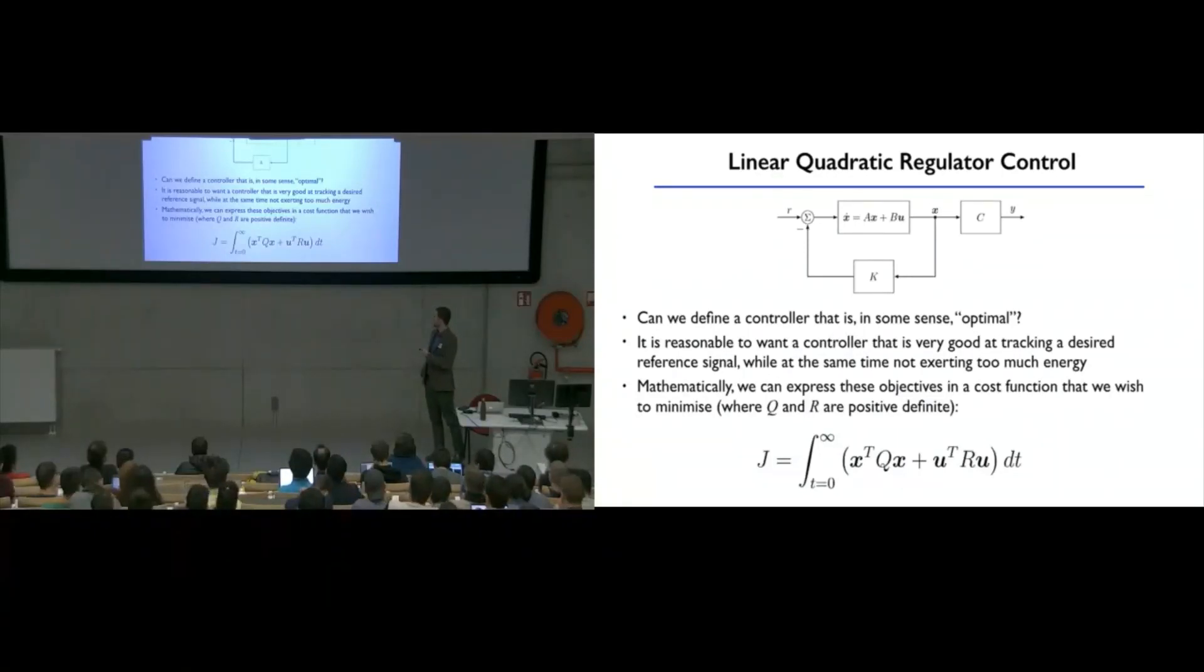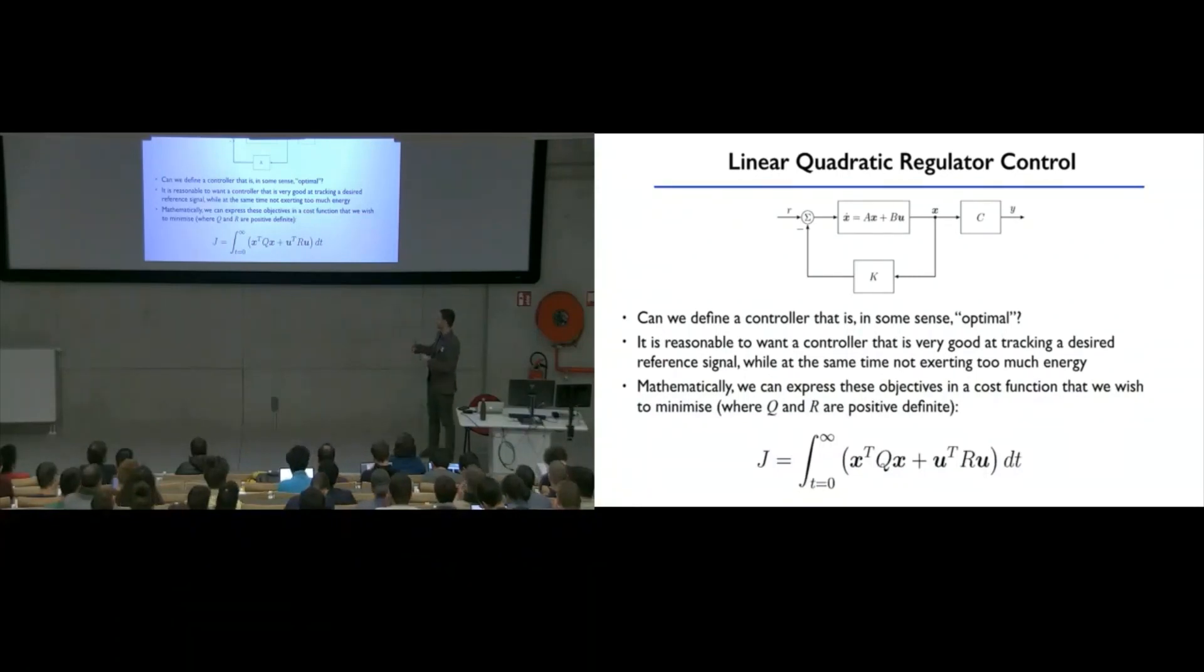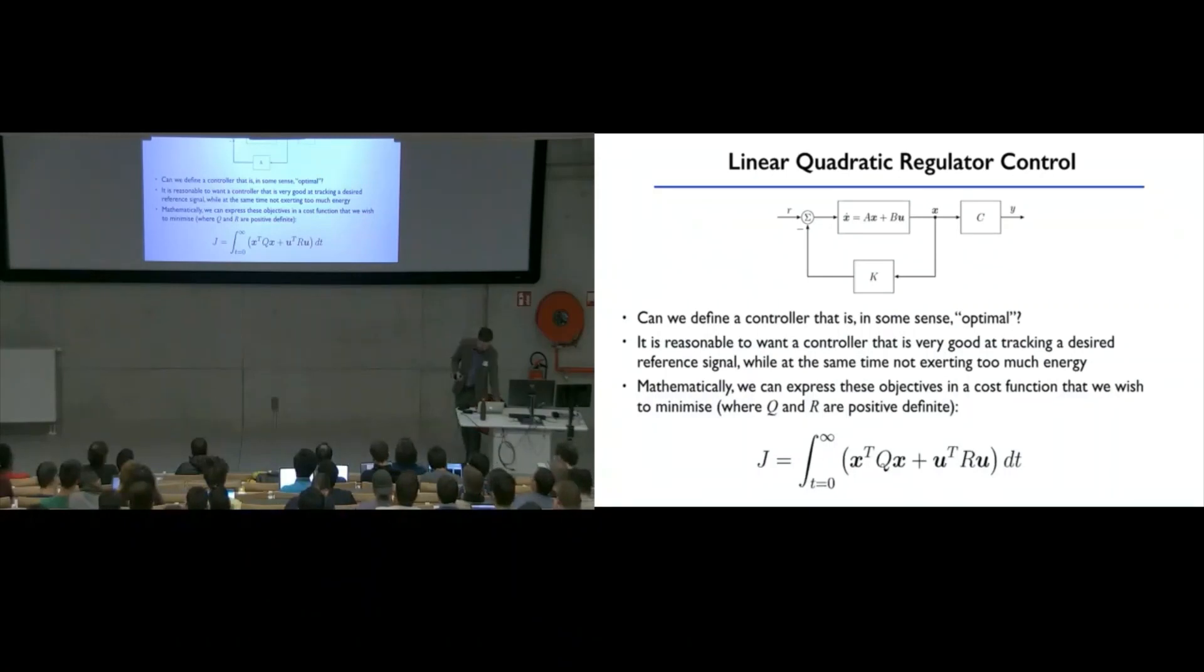By defining these positive definite weighting matrices that define the relative importance of sending our state or components of our state to zero versus how much energy we exert between different components of our control, we can seek to specify a controller that is, at least in this sense, optimal. Okay, so let's have a go at doing that.